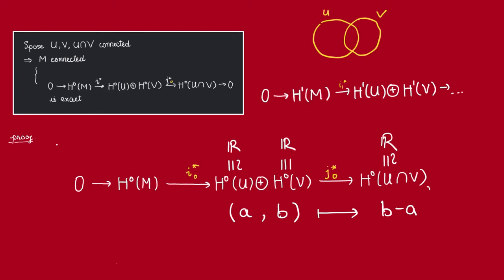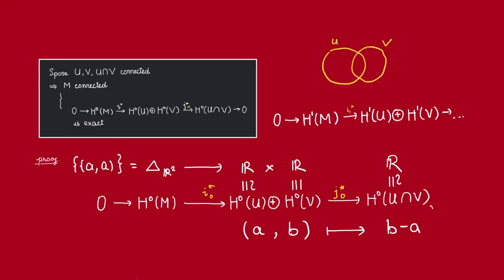Now, what is its kernel? Well, observe from here that its kernel would be the diagonal in R squared. This is the subset of the plane consisting of points of the form (A, A). In particular, this is isomorphic to R as a vector space. So we see that H0 of M is just going to be isomorphic to R. And thus, M must be connected because remember that H0 counts the number of connected components.